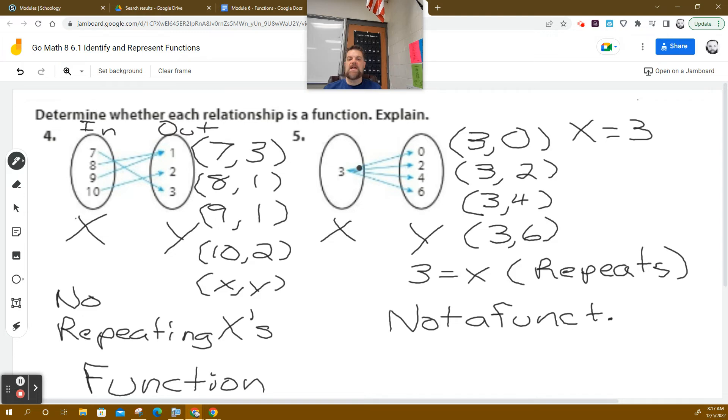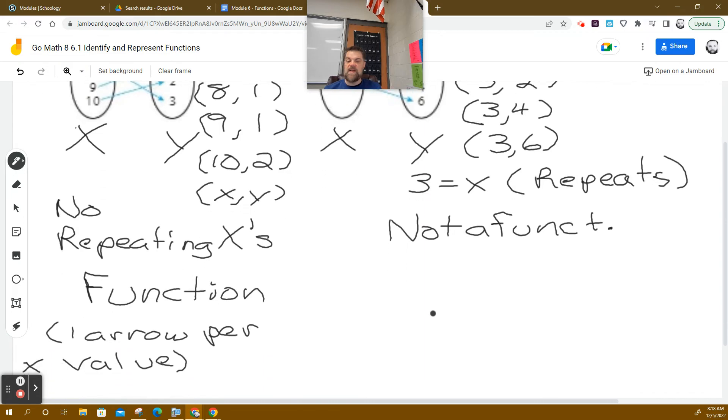But on number five, when I have three, I have four arrows leaving three. That's not a function. Because when I plug three into the function, I can get zero. When I plug three, well, I shouldn't even say function. When I plug three into the equation, I can get zero. When I plug three into the equation, I can get two. When I plug three into the equation, I can get four. When I plug three into the equation, I can get six.